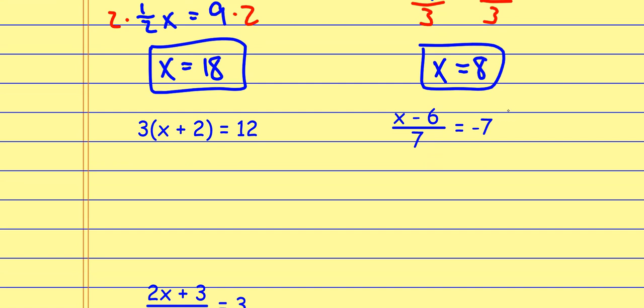If I look at 3 times the quantity X plus 2: some of you might say you can distribute that three, but let's work backwards through order of operations. Think about what's happening to X — if I knew what X was, I would add two to that value first, then multiply by the three. So to undo that process, I have to undo multiplying by three first. The opposite of multiplying by three is dividing by three. The multiplication and division cancel out. Now I undo what was in the parentheses — the addition: the opposite of adding two is subtracting two.